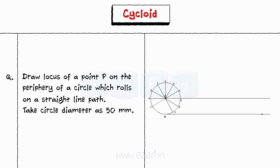Step 3: Now divide the circle into 12 equal parts and also the horizontal line into 12 equal parts. Name the points as C1, C2, C3 till C12.